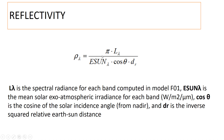Reflectivity is computed by multiplying the spectral radiance of each band by pi, then dividing by the mean solar exo-atmospheric irradiance of the band, multiplied by the cosine of the solar incident angle from nadir, and multiplied by the inverse square of the relative Earth-Sun distance.